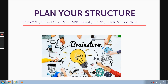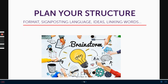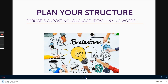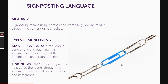I'll focus on the structure in this section. How do we build our speech? We need to think through the format — what do we want to include? We definitely want to include signposting language. We need to brainstorm some ideas, and how do we connect these ideas? Through linking words. Signposting language is essential in debates because it outlines the main arguments of the topic. We need to lead these arguments starting with an introduction, a body paragraph, and a conclusion.